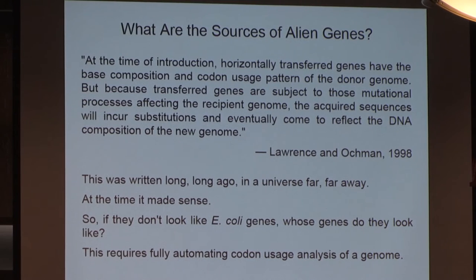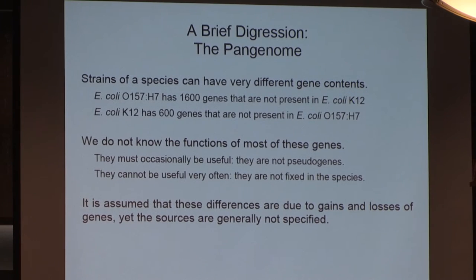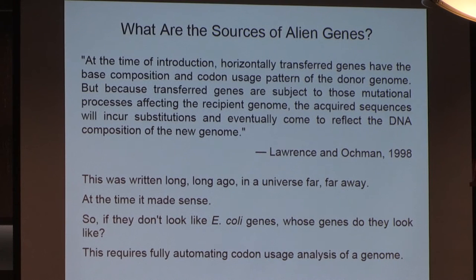The thinking at the time was: where do they come from? They come from some other source. When we look at them and see they have a different codon usage and different base composition, we assume they come from far away. After they're acquired, the most common fate is they're lost again. But if they remain, the belief is they will drift to look like the host genome. This makes sense, and in fact there's a lot of data supporting it. If you put a gene in E. coli and wait — a while being millions of years — it looks like E. coli. Nature and evolution are patient.